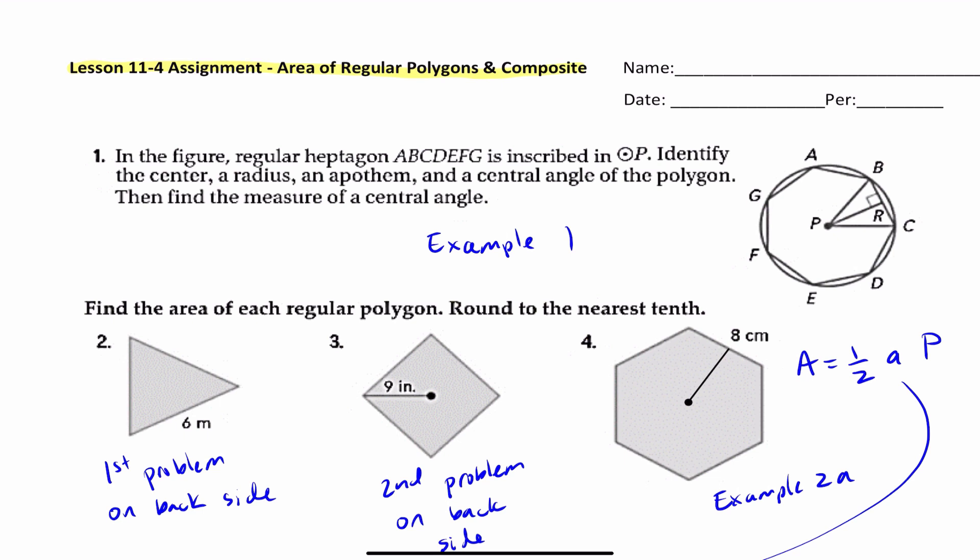Number one, it says in the figure, regular heptagon ABCDEFG is inscribed in circle P. You're going to be identifying the center, radius, apothem, central angle, and then find the measure of that central angle.